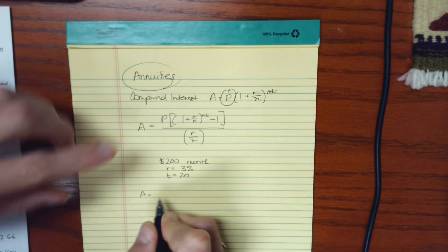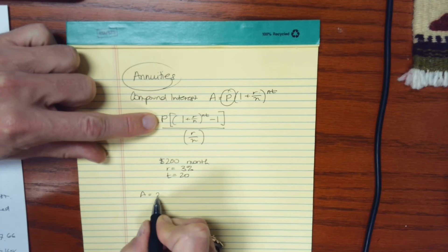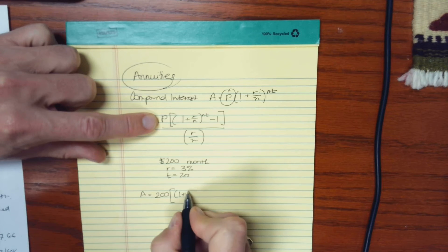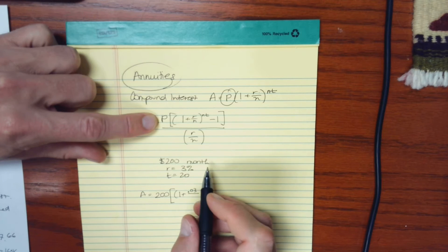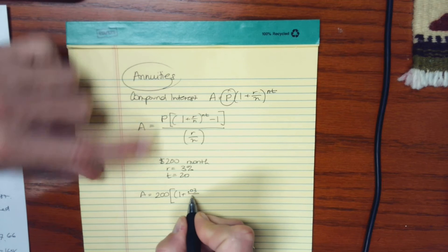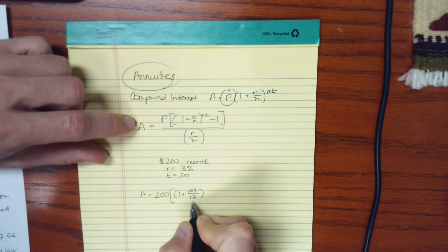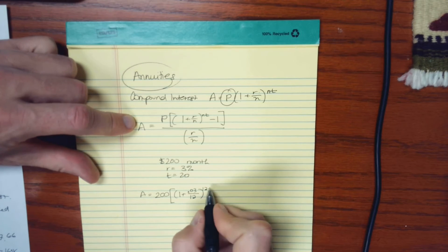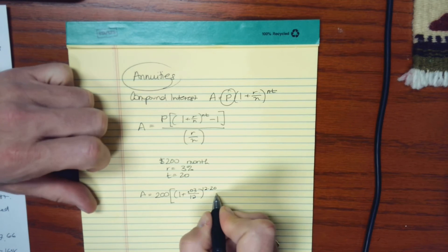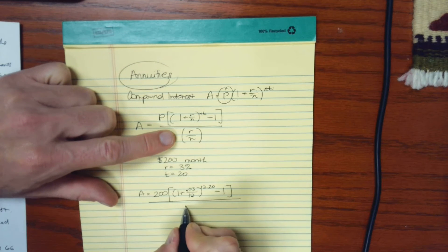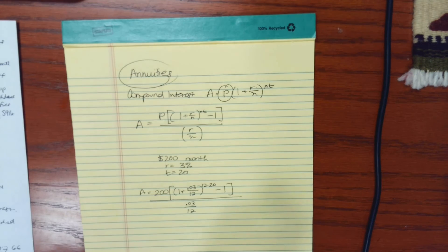So how much money do we expect to have after the 20 years? So I'll take my contribution, my regular contribution of $200. One plus R, the interest rate is 3%, so 0.03 over N. This is monthly. And so this is over 12. That's how often I'm making my payments and also how often this is compounding. This is 12 times T. I've got 20 years to do this. Minus one. And that's all divided by R over N, which is 0.03 over 12.